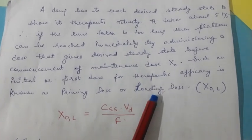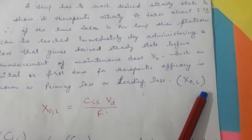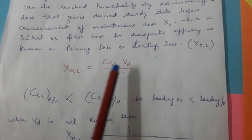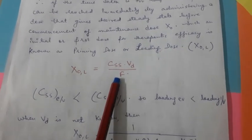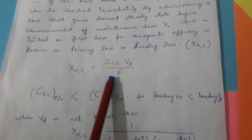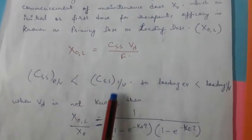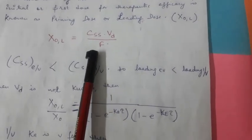Is priming dose ya loading dose ko likhte hain symbol X0L se. X0 kya hota hai: concentration into volume of distribution, matlab Css × Vd / f. Css is steady state concentration, f kya hai - f is fraction of the dose absorbed. Yeh kab aata hai: IV ki case mein yeh nahi aata, par yadi hum drug extravascular route se lenge to yeh aata hai.